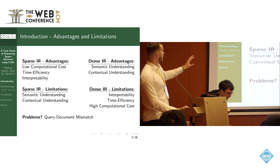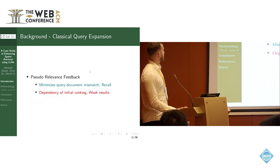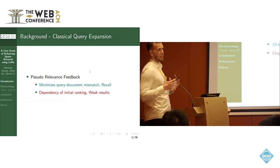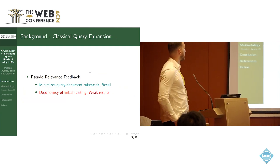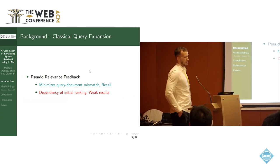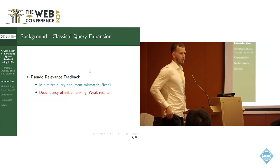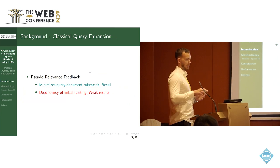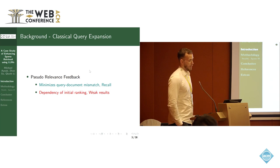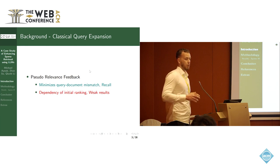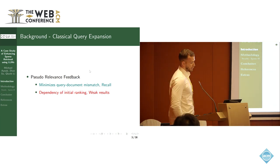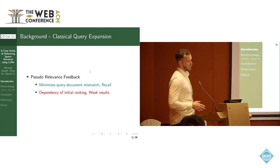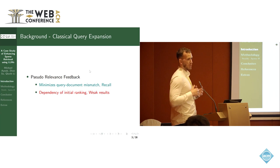Therefore, our research is targeted towards sparse IR and how we can make sparse IR more effective. Many studies have been targeted towards how we can improve sparse IR in general. Pseudo-relevance feedback is a classical query expansion method which aims to minimize the query-document mismatch. However, it has a huge dependency on the initial ranking — if the initial ranking is inaccurate, the retrieval results will also be weak. Studies have shown that classical query expansion may not be capable of improving top-heavy ranking metrics.